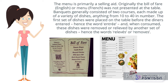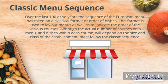Banquets generally consisted of two courses, each made up of a variety of dishes — anything from 10 to 40 in number. The first set of dishes were placed on the table before the diners entered, hence the word 'entrée,' meaning the entry. When consumed, these dishes were removed and replaced by another set, hence the words 'reliefs' or 'removes' in French.